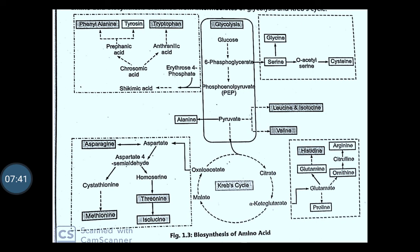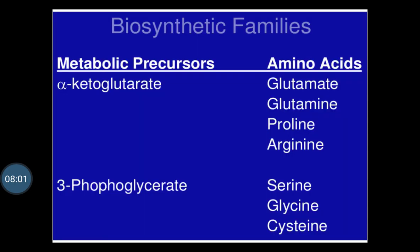The different amino acids get biosynthesized through the central pathway of the glycolysis and Krebs cycle. The components which are formed during glycolysis and Krebs cycle act as a precursor for the biosynthesis of the different amino acids in the plant. The biosynthetic families — that is, the metabolic precursor and the amino acid formed from the alpha-ketoglutarate — give biosynthesis of glutamate, glutamine, proline and arginine.